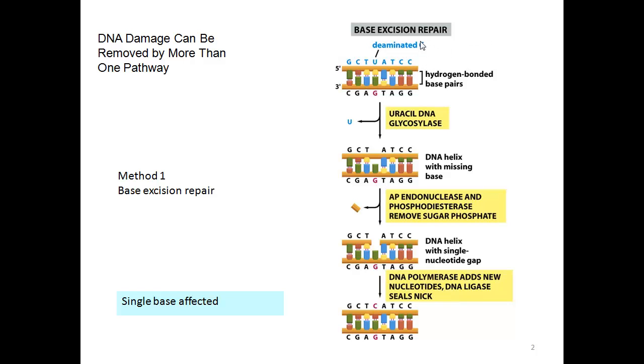Method one is base excision repair. This occurs when a single base is affected. The case shown here is a type of damage called deamination, when a C base has an amino group that gets deaminated, leaving a carbonyl group in its place.